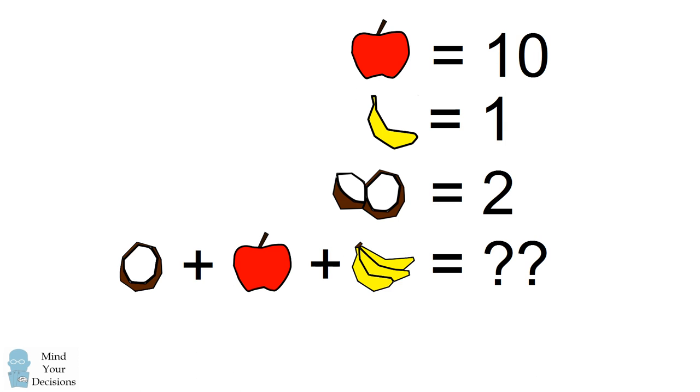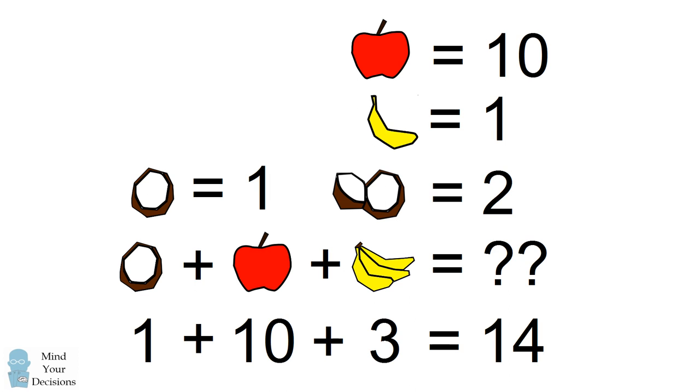Now even people who agree up to this point still might have a debate about the very last line, which is what you're supposed to evaluate. Because if you look closely, there's some differences in our pictures. We don't have a full coconut, we actually have a half coconut. So if a full coconut is equal to 2, then a half coconut would be equal to 1. So we have 1 for the coconut, we add 10 for the apple, and finally people still get confused at this point because we don't have 4 bananas. If you look closely, we actually only have 3 bananas. So you want to add 3 at this point, and you get 1 plus 10 plus 3, and that gives us our answer of 14. This is what most people consider to be the correct answer.